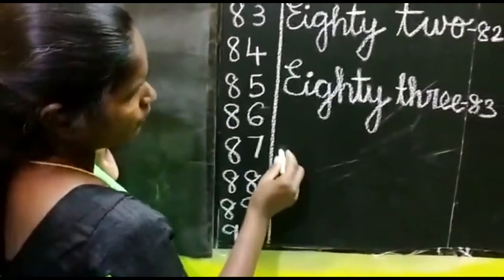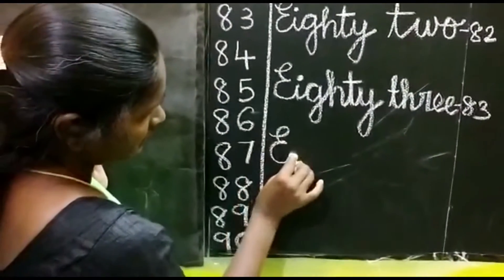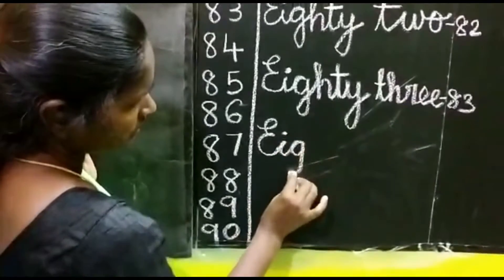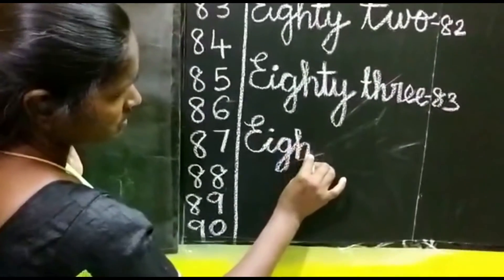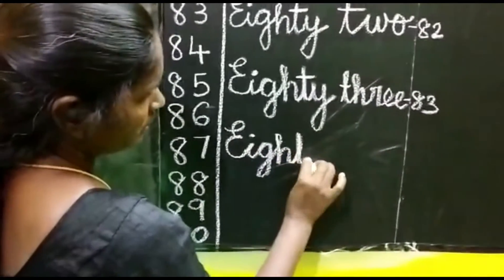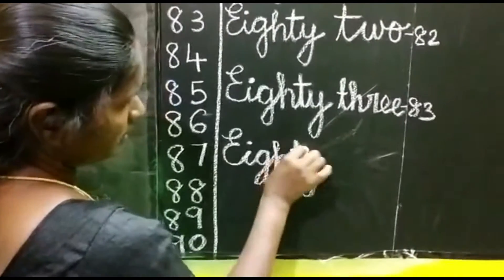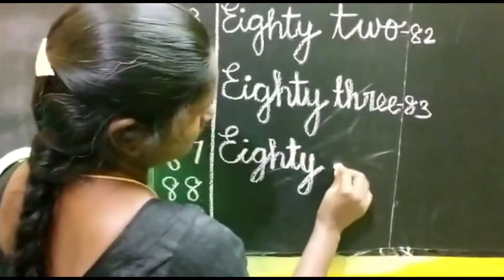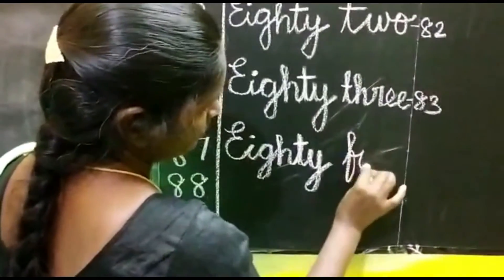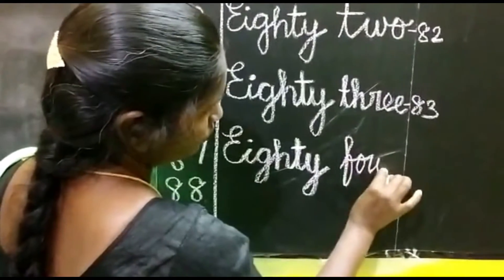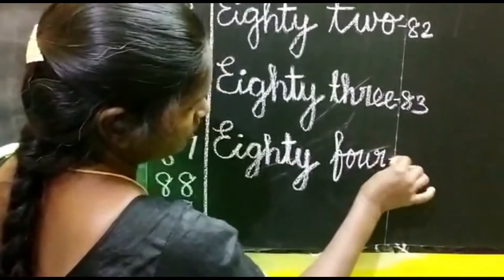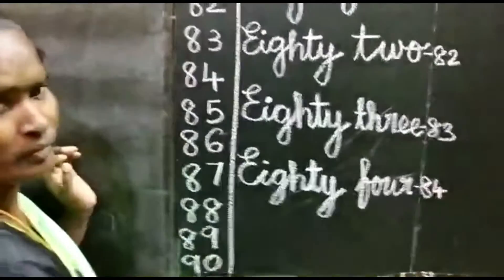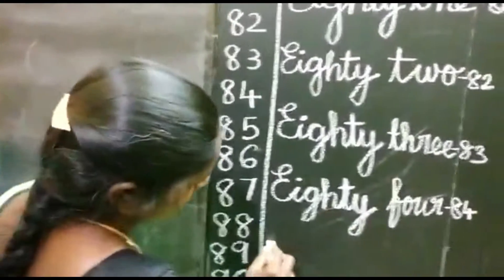84. E-I-G-H-T-Y. 80, then 4. F-O-U-R. 84 is EIGHTY FOUR.